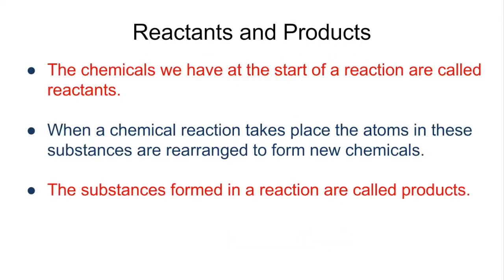The chemicals that we have at the start of a reaction are called the reactants — these are the things that you put into your test tube or your beaker in order for them to react. Once they undergo their chemical reaction, the atoms are going to rearrange and they are going to form new chemicals, and these new chemicals are called products. So at the very start we have our reactants, we undergo our chemical reaction, and then we have our products.